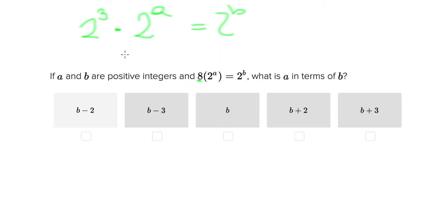Now, this makes it simple because we know that when you multiply the same number with different exponents, all that you do is you add the exponents. So really you're saying here 2 to the 3 plus a equals 2 to the b.